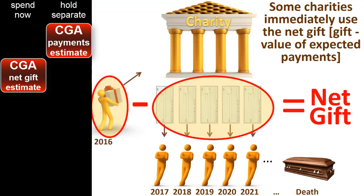To make immediate use of charitable gift annuity funds, the charity spends the projected gift portion of the transaction. Calculating this projected gift portion involves estimating the donor's longevity and the charity's investment returns. Consequently, there is some risk involved if the projections are in error. This risk explains why not all charities engage in this practice of immediately using the projected gift portion of charitable gift annuity funds.